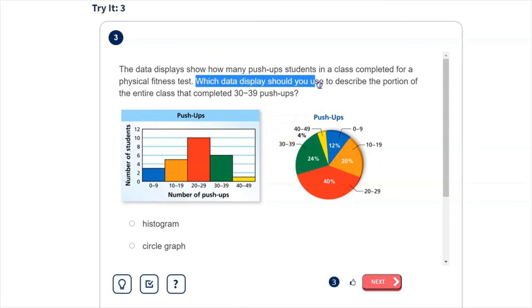So if we want to know which data display to describe the portion of the entire class that completed, we would want to use this circle graph here.